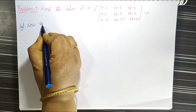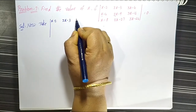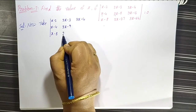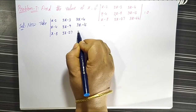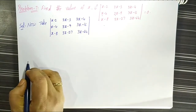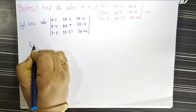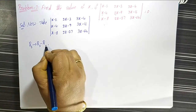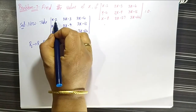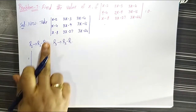Now take the determinant LHS value: x-2, 2x-3, 3x-4; x-4, 2x-9, 3x-16; x-8, 2x-27, 3x-64. In this determinant we have to apply two operations: R2 becomes R2 minus R1, and also R3 becomes R3 minus R1.